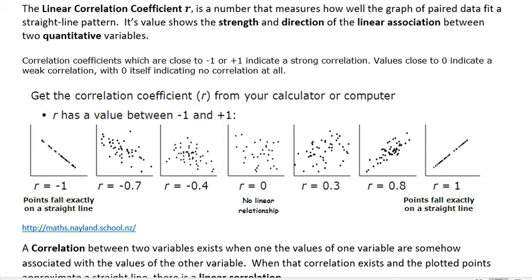Correlation coefficients close to negative one or positive one indicate a strong correlation, and values close to zero indicate a weak correlation, with zero indicating no correlation at all.